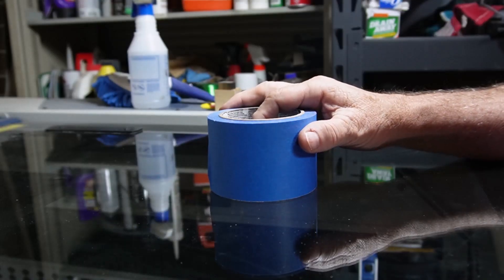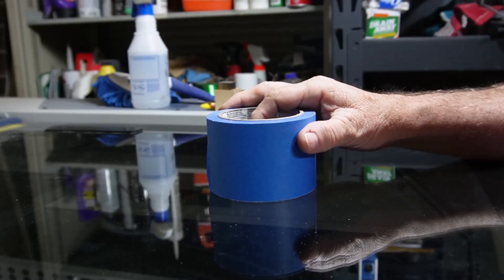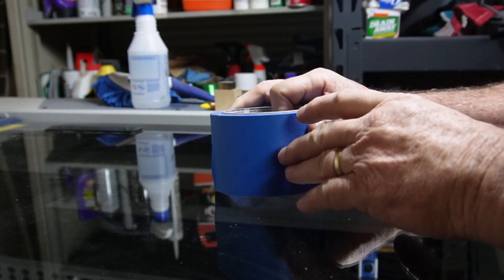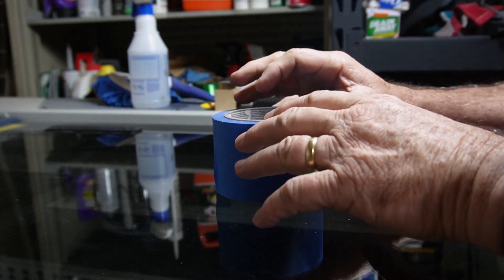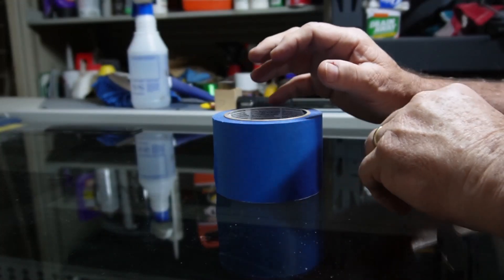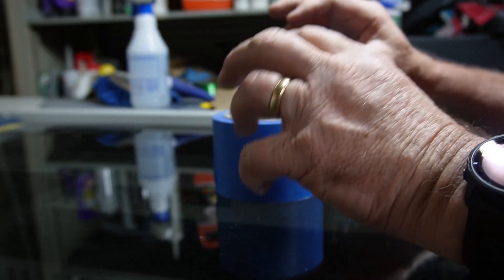This is part three on blue painter's tape can be a laser engraver's friend. This time we're going to do something a little different. I'm going to show you an engraving of three dice side by side, two sets of three dice.